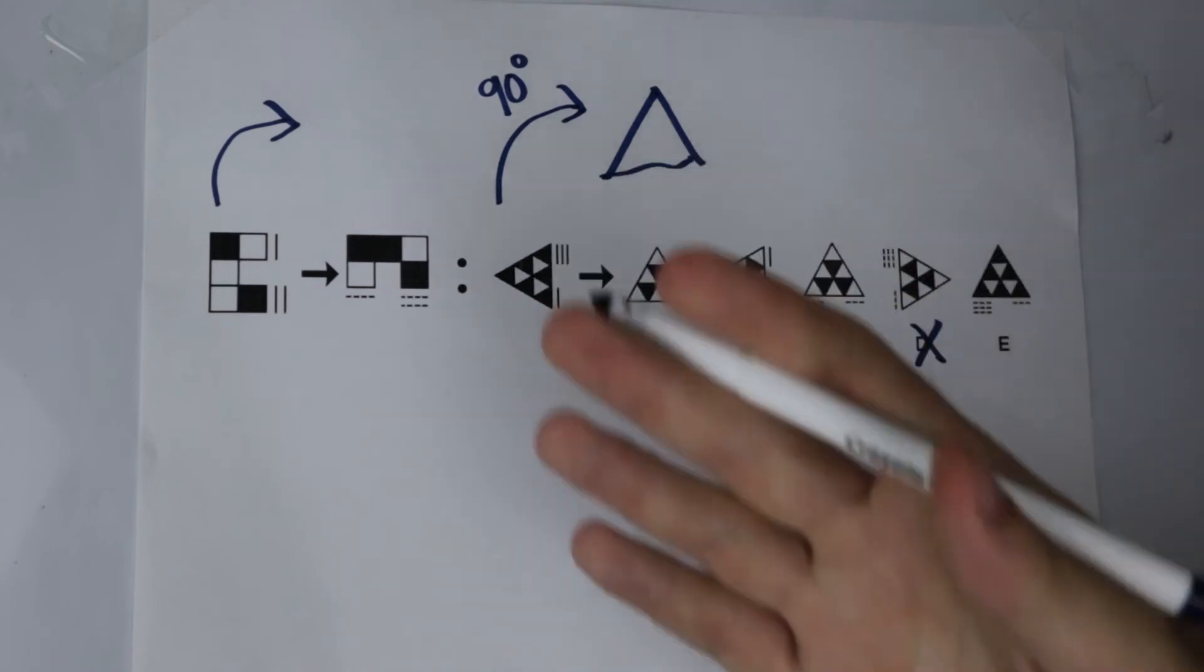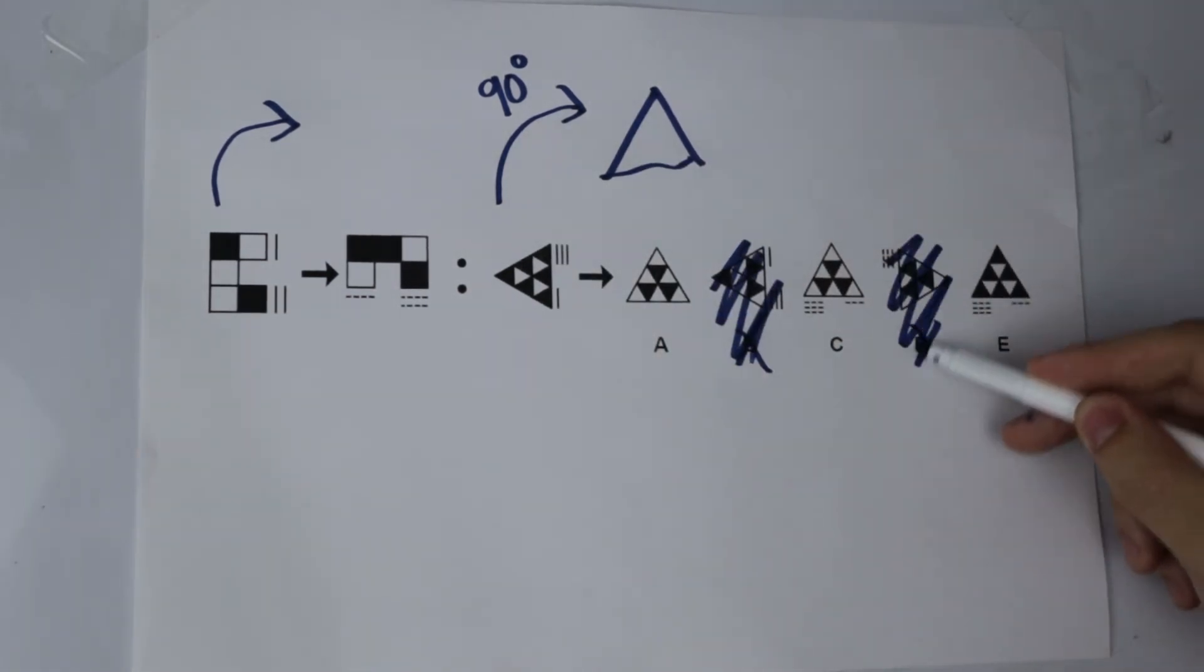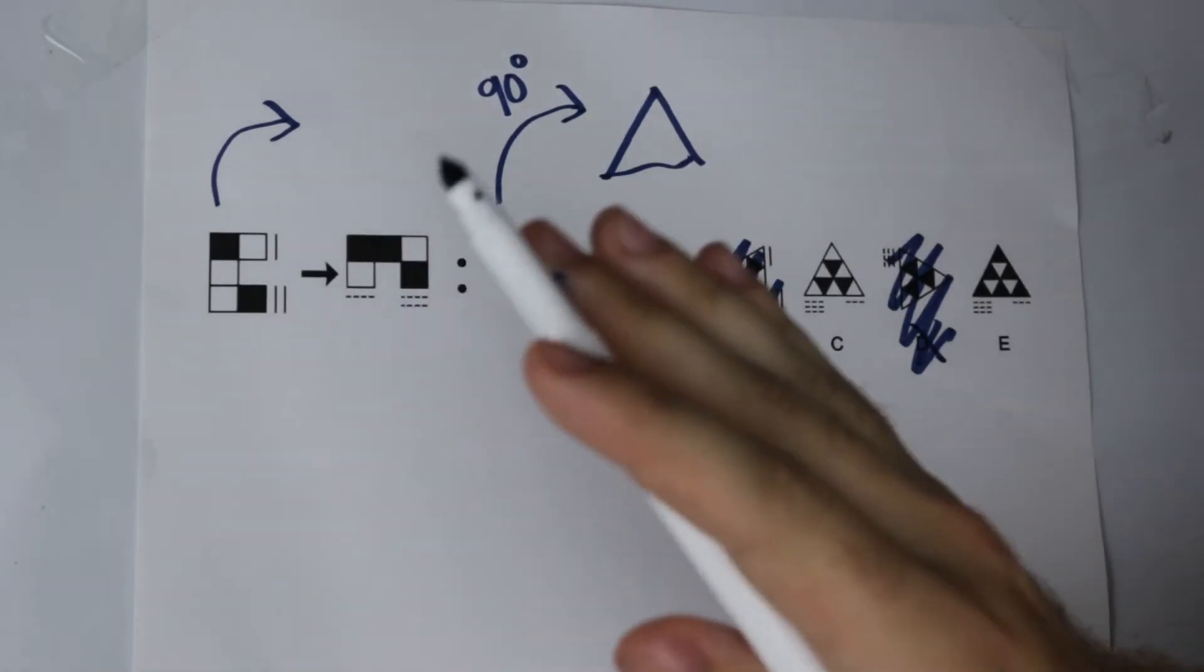It cannot be D. It is not following the same transformation. And already I have got rid of two possible answers just from looking at one feature. Straight back into the initial shape, let us look at a second feature.